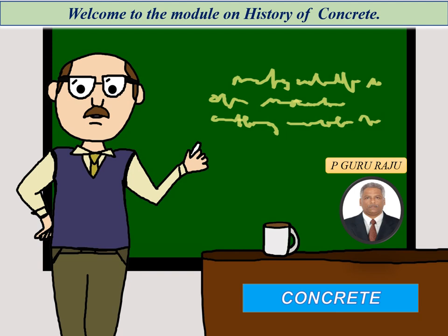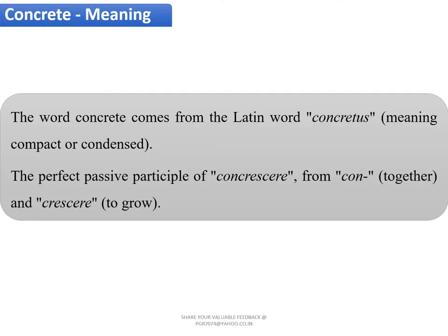Welcome to the module on history of concrete. In this module we will discuss about the point when concrete actually started in the world and how concrete has been developing since 6500 BC. The word concrete came from the Latin word known as concretus, meaning compact or condensed.